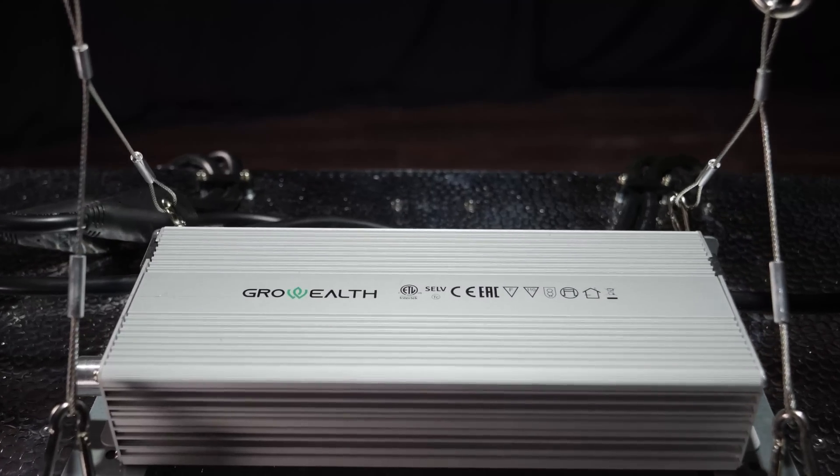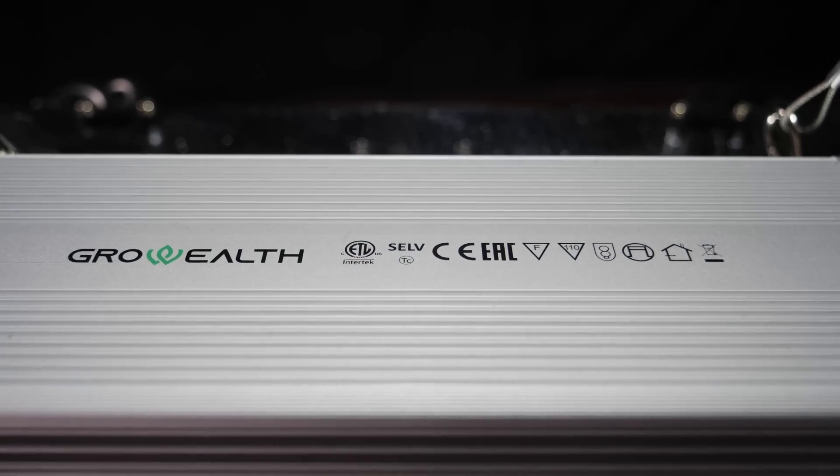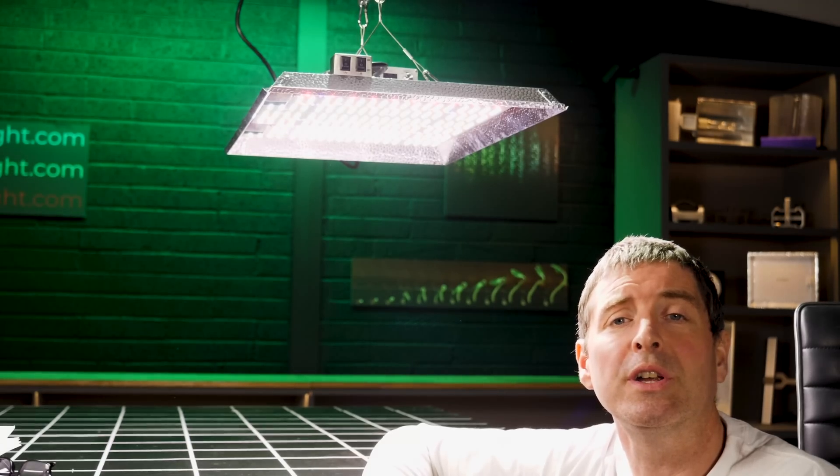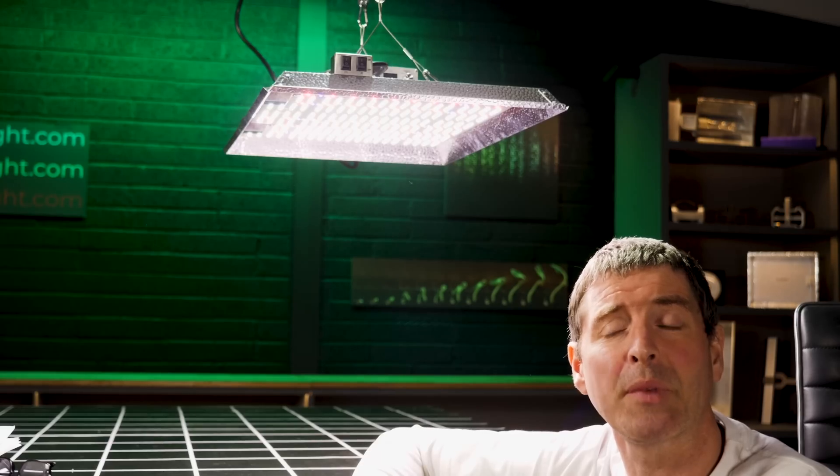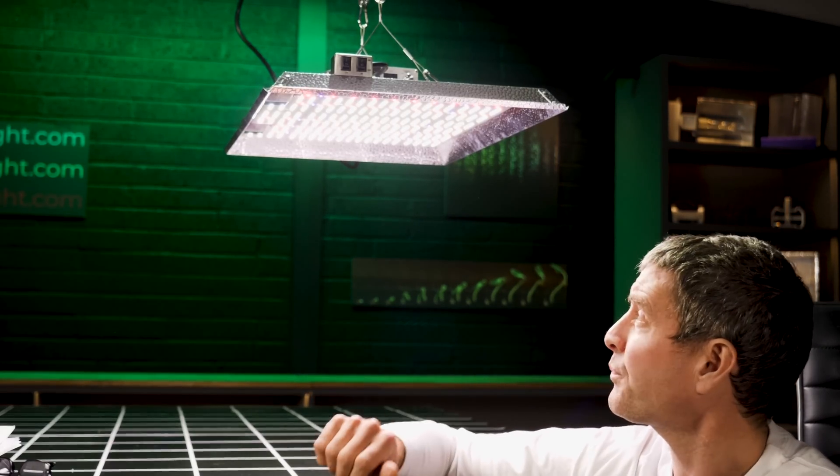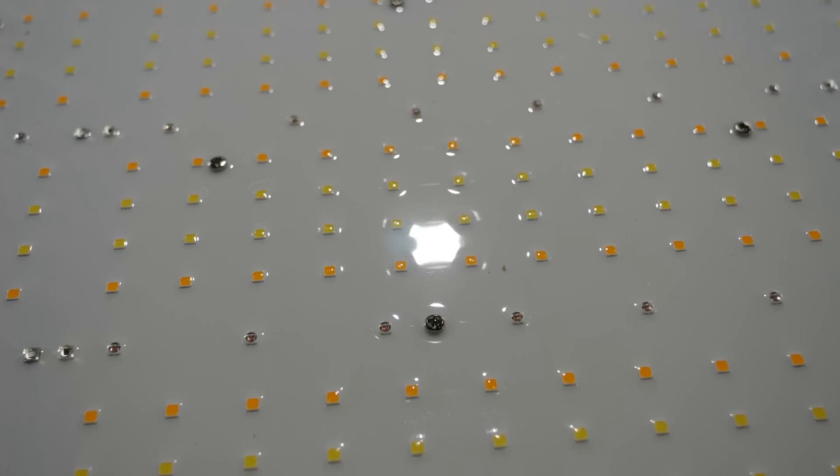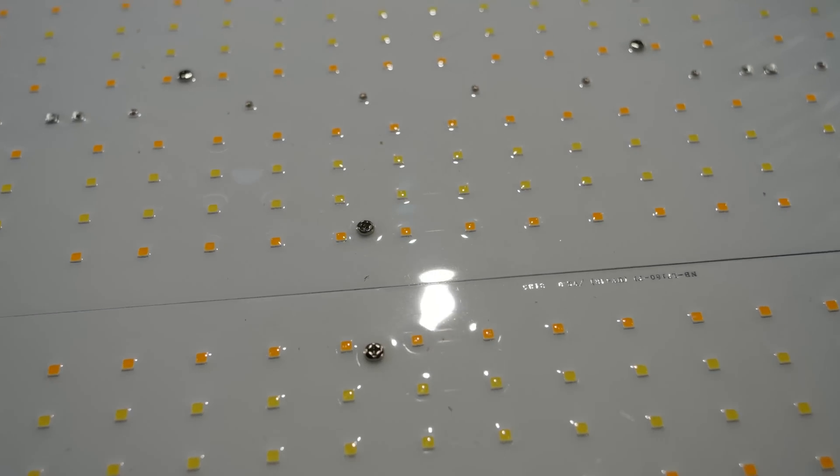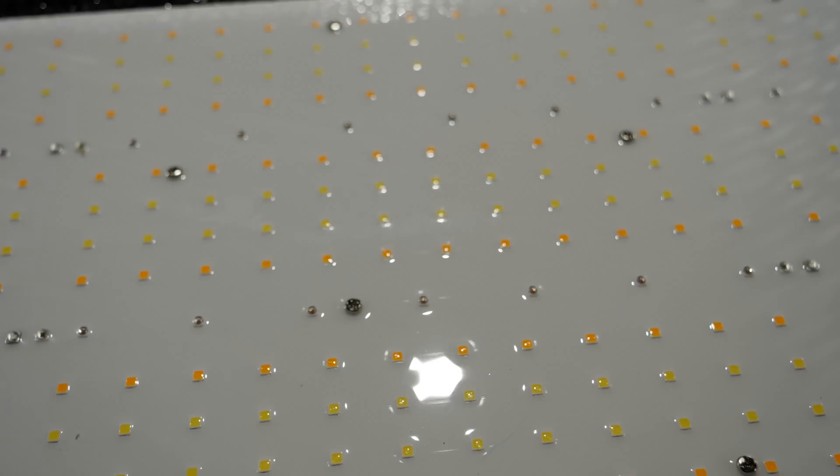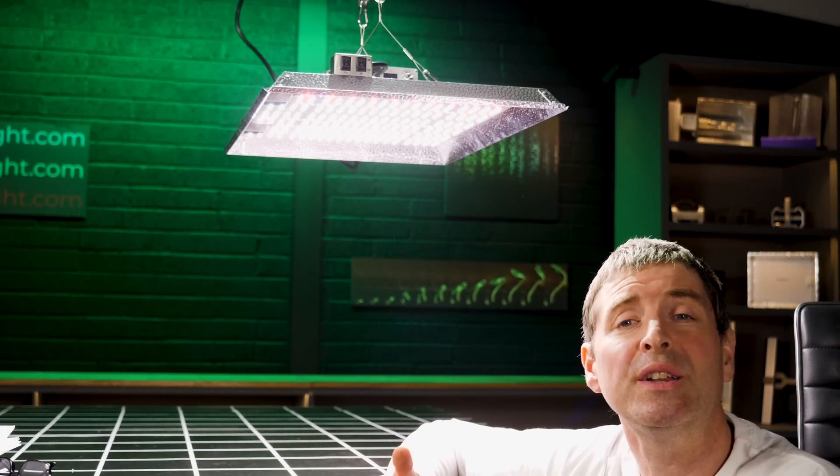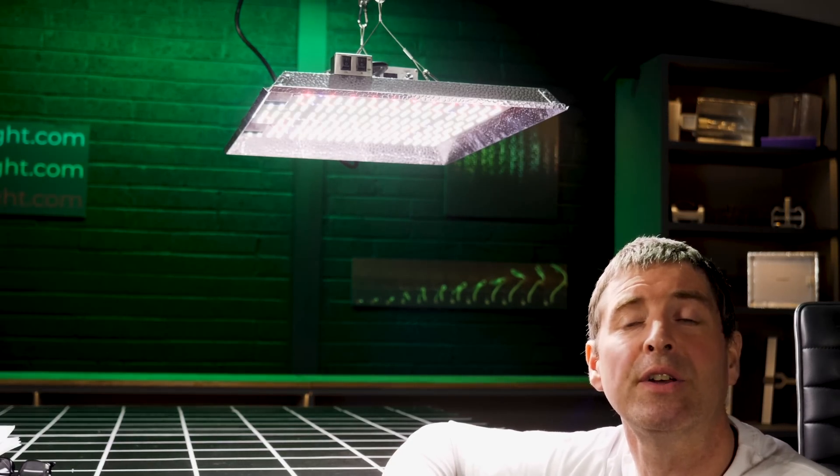The LEDs themselves are all coated. So you've got a silicon coating over the LEDs to protect them from dust, dirt, and moisture. The LEDs themselves, you've got white Samsung LEDs. They're a mixture of cool white and warm white. You've also got the 660 nanometer reds for enhanced system efficiency.